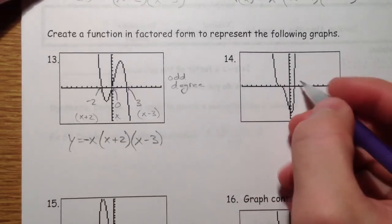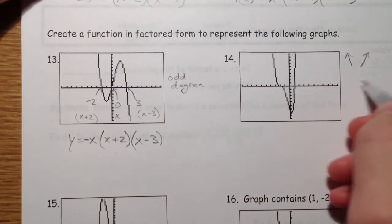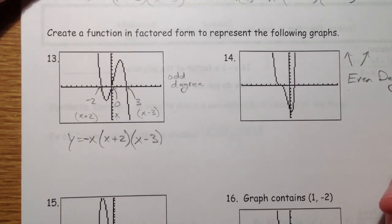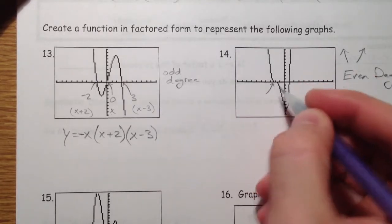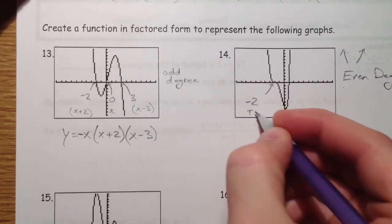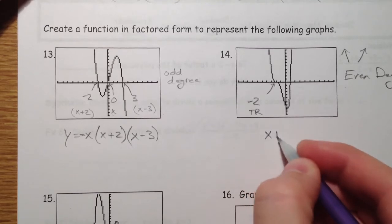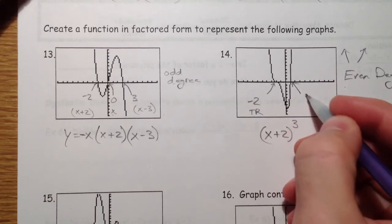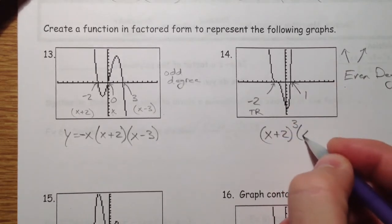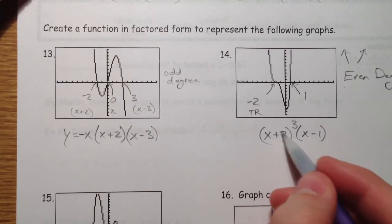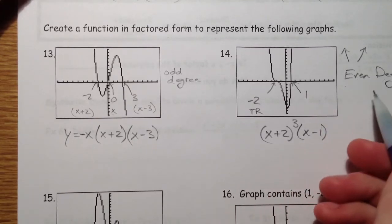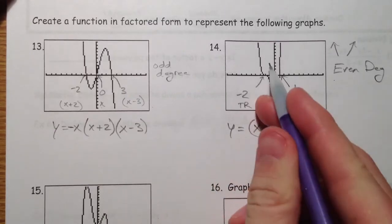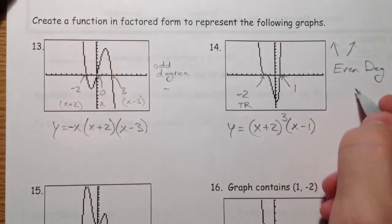This one is going up both directions. And so this has got to be an even degree. At negative 2, it's a triple root. And so x plus 2 is going to be raised to the third power. And at 1, it's a single root. So I can make x minus 1 a single root. So that's 1, 2, 3, 4 for an even degree. And that works. y equals all that. Because it opens up, it's got to be positive.